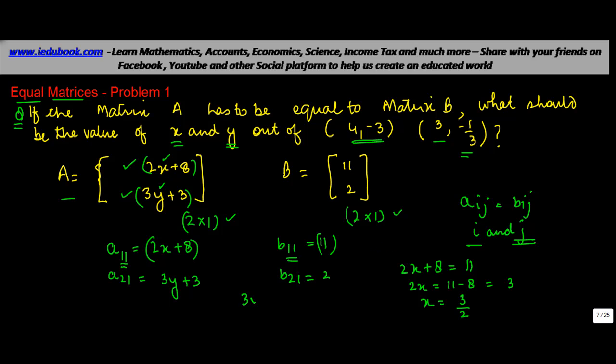Similarly, we have 3y plus 3 is equal to 2, or 3y is equal to 2 minus 3, or minus 1, which gives the value of y is equal to minus 1 upon 3.